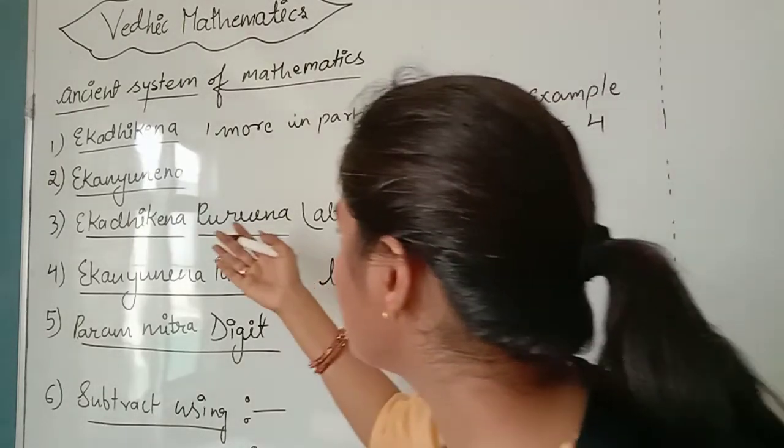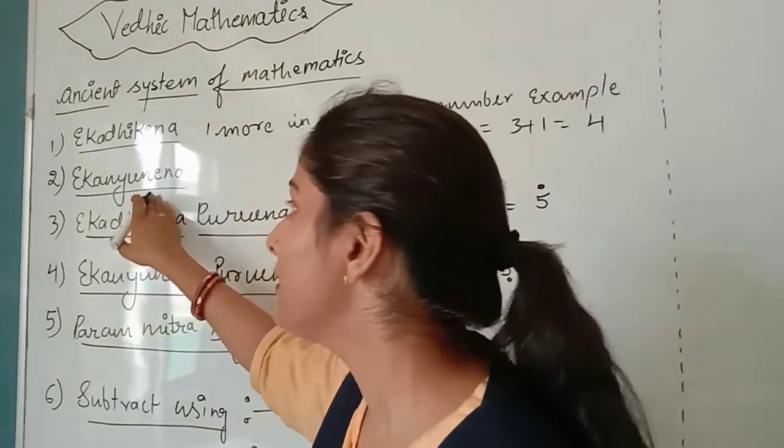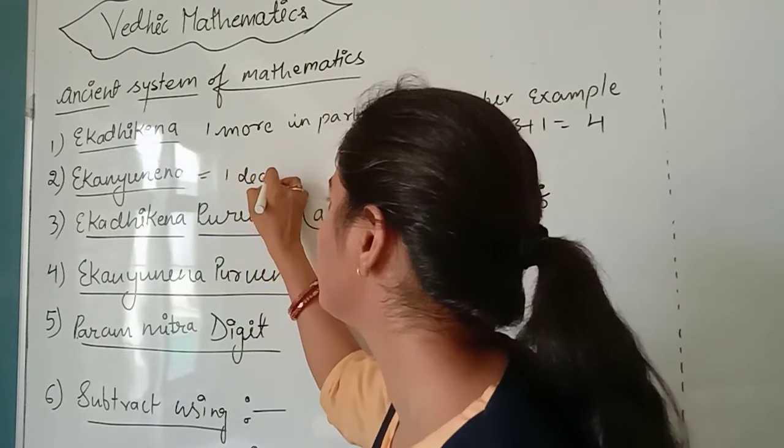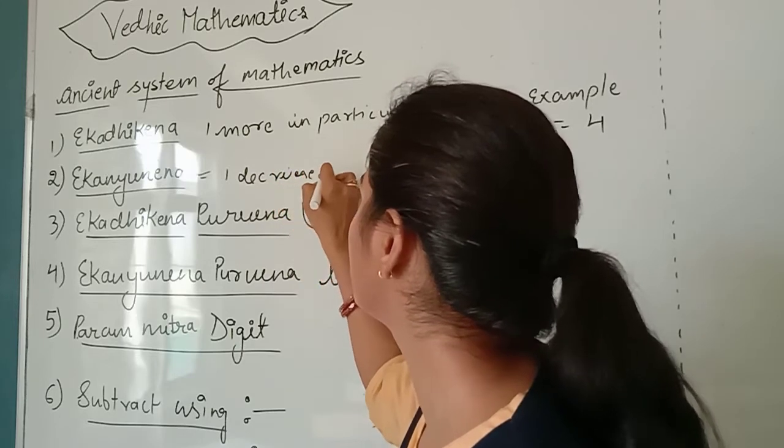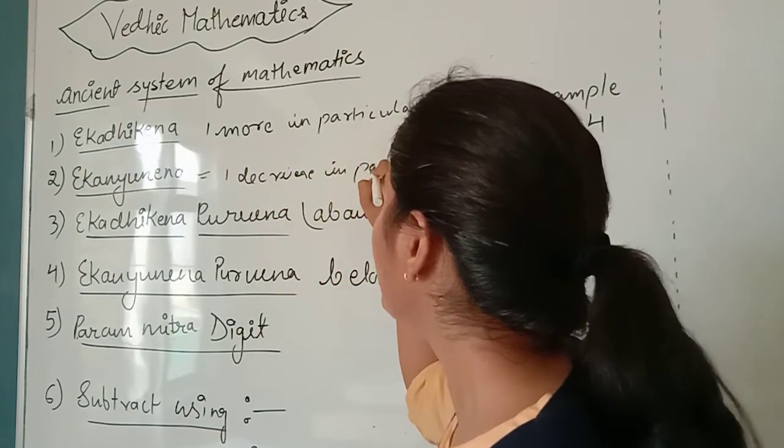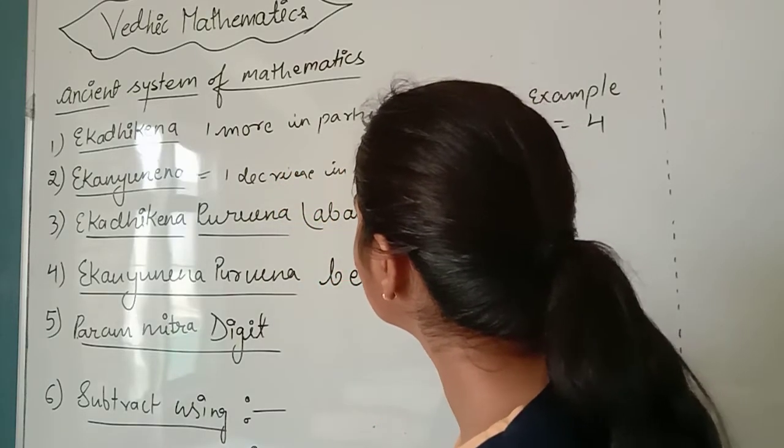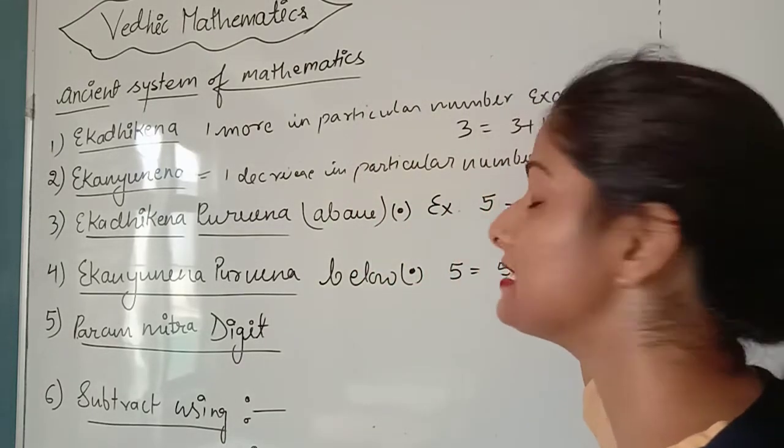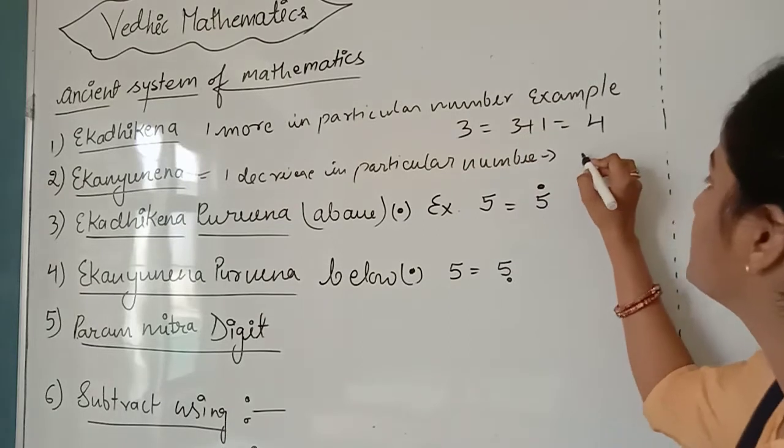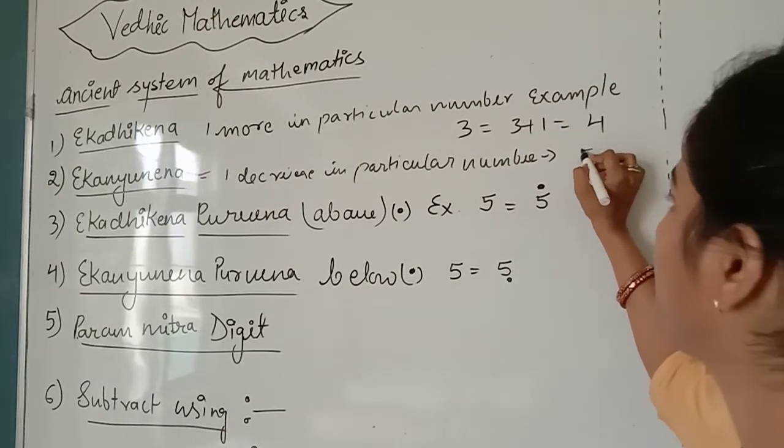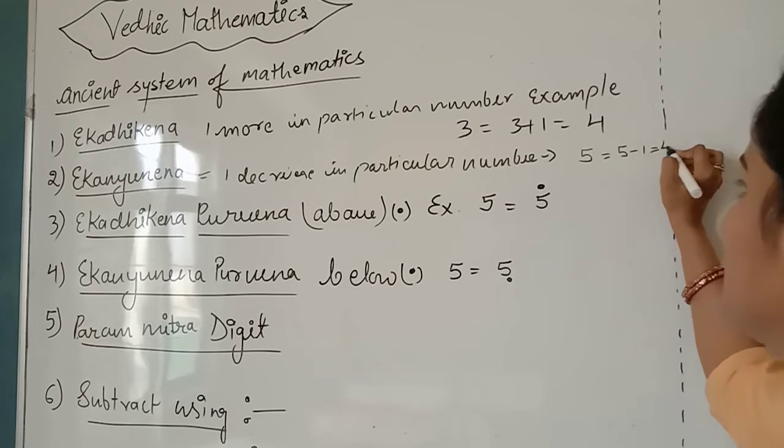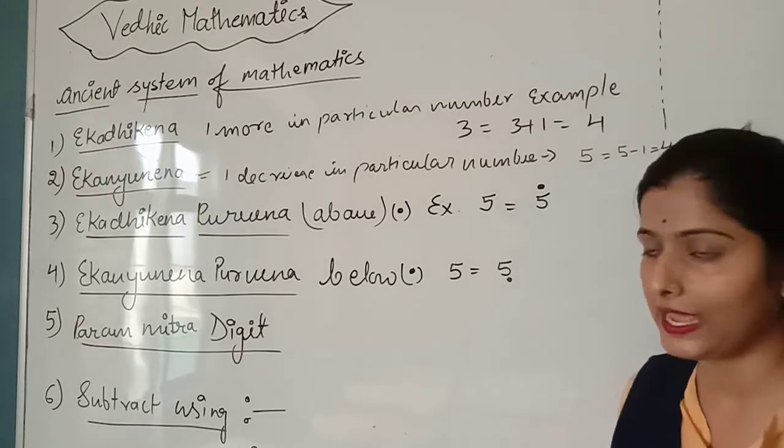The next thing is one decrease in a particular number. For example, suppose our number is 5, then 5 minus 1 is equal to 4.